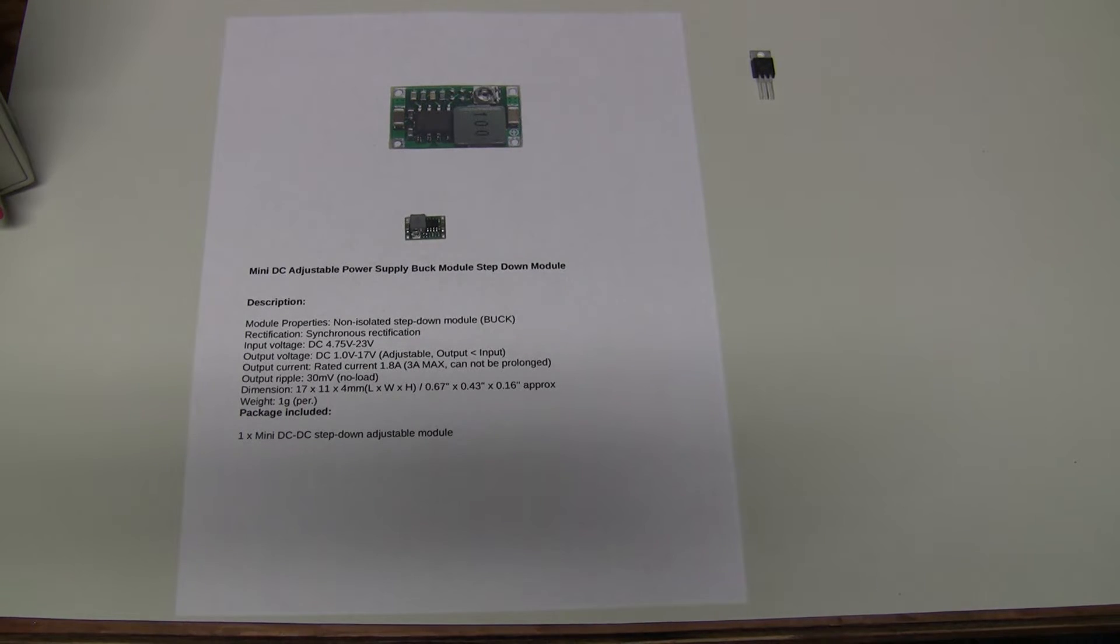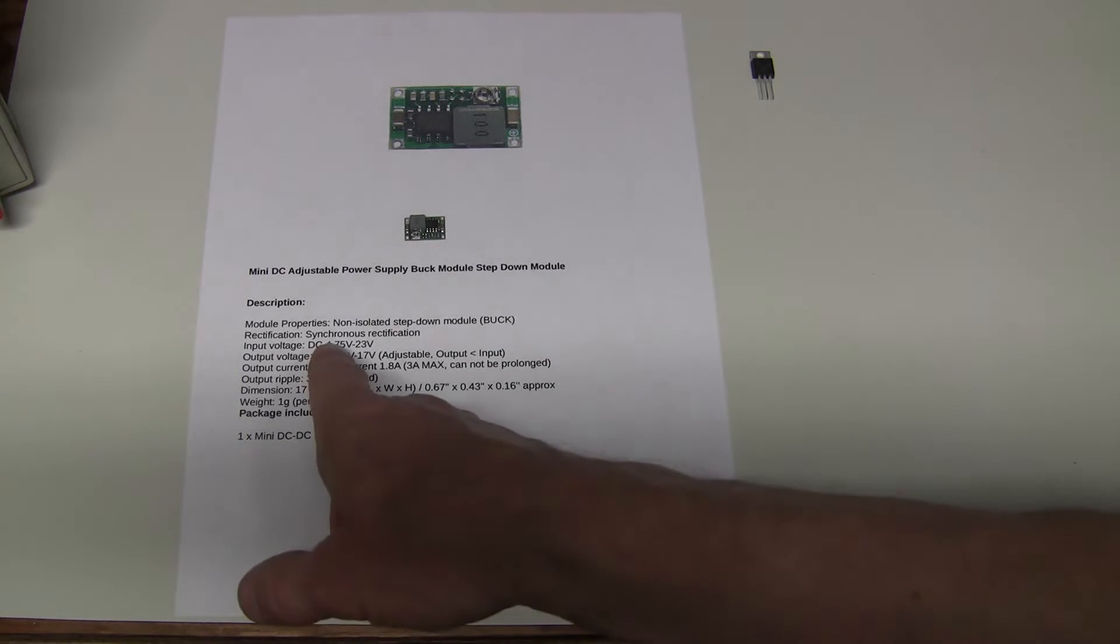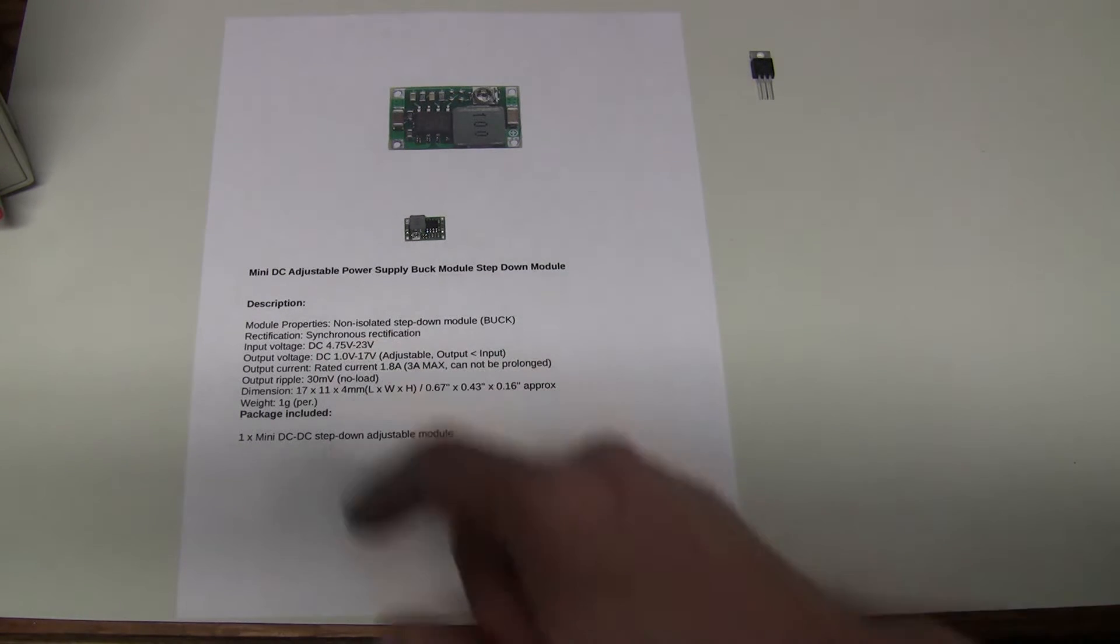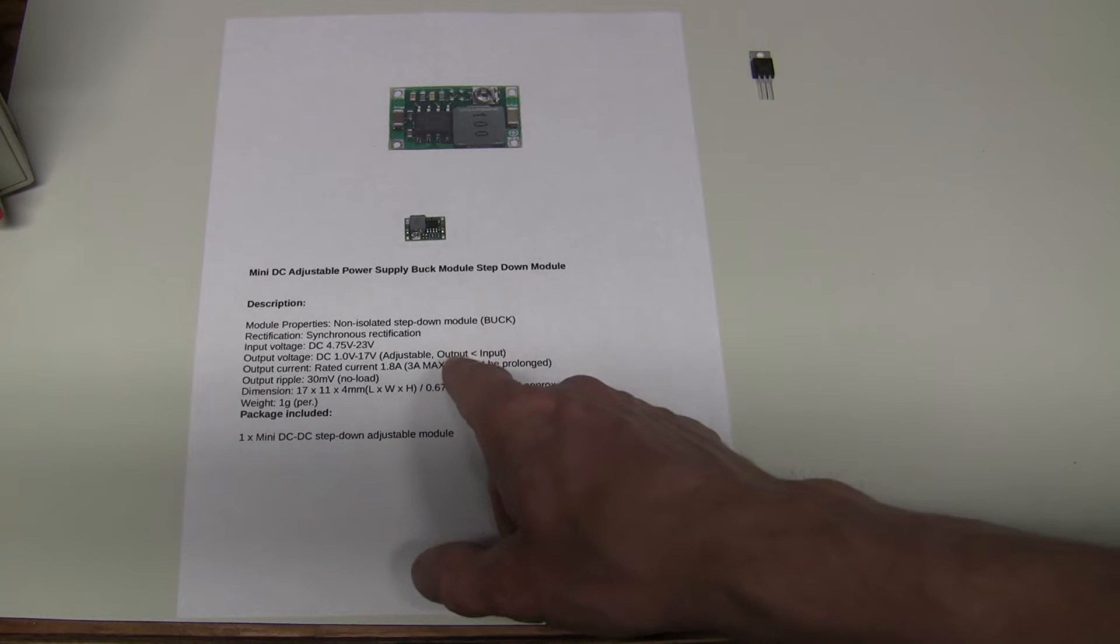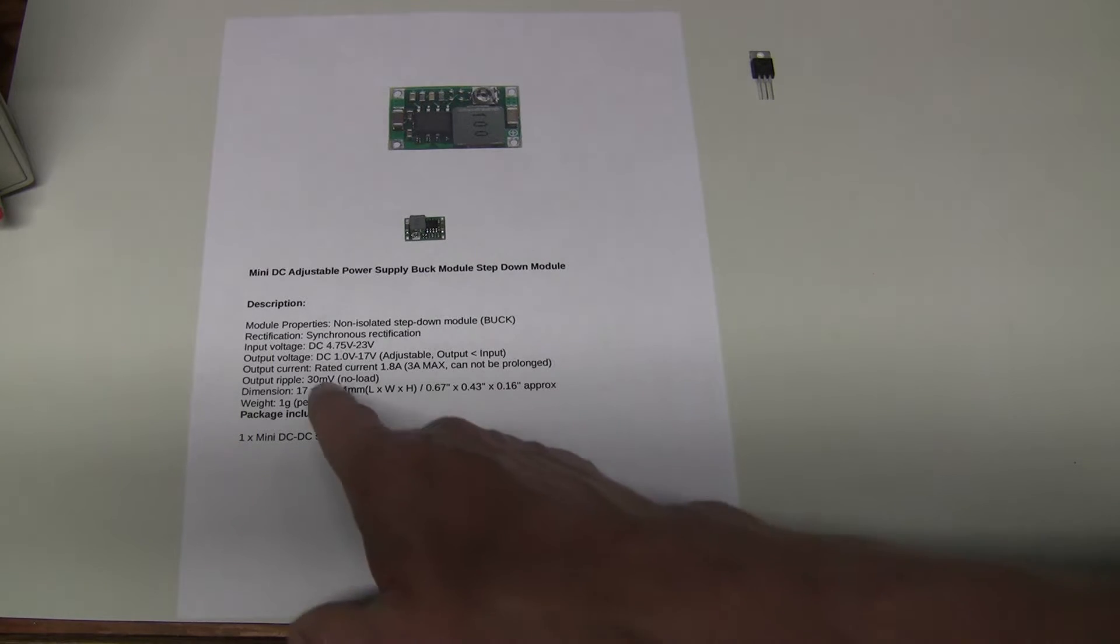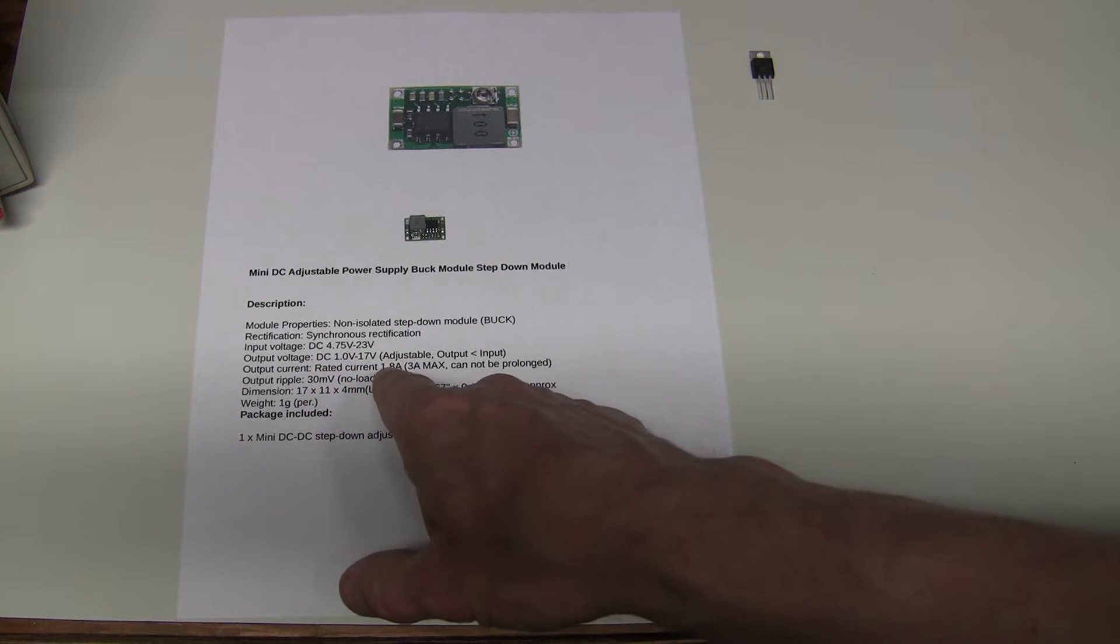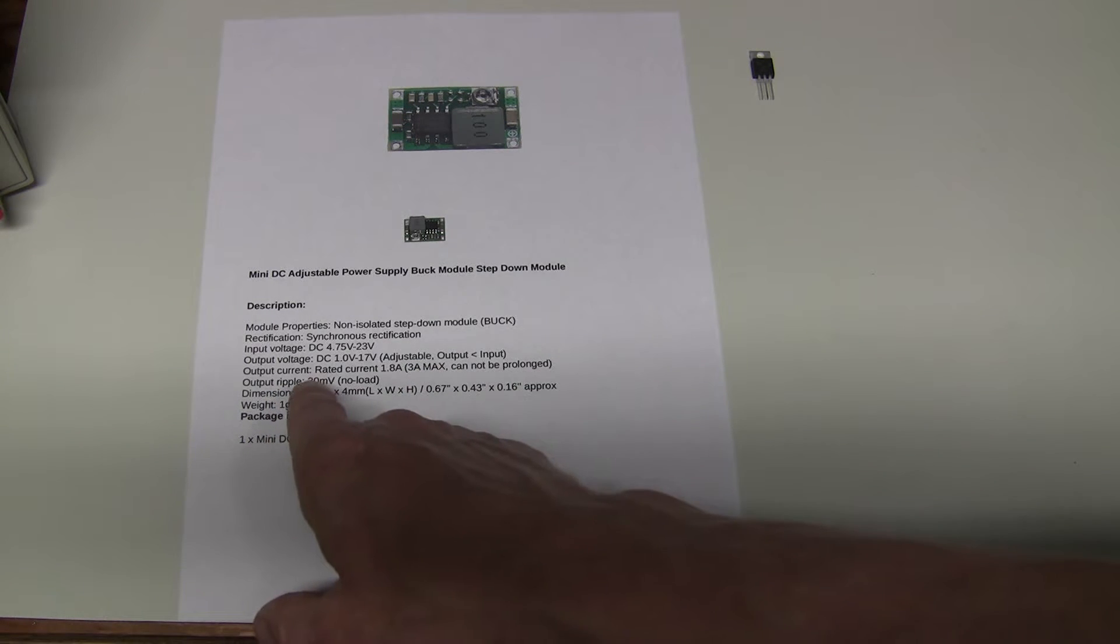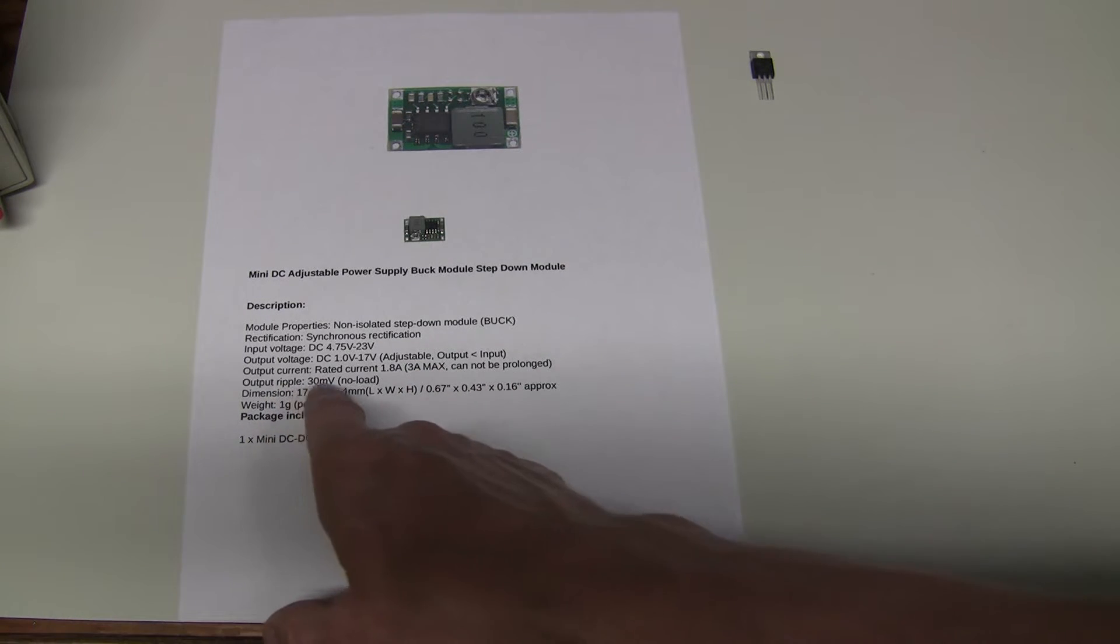Unfortunately the documentation is not very extensive, just a few basic facts. The input voltage should be from 4.75 to 23 volts, the output can be adjusted from 1 volt to 17 volts, and obviously because it's step-down the output should be lower than the input. The current handling is up to 1.8 amps with 3 amp spikes, and they promise that ripple is 30 millivolts with no load.